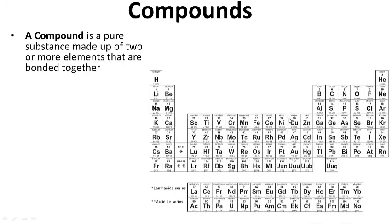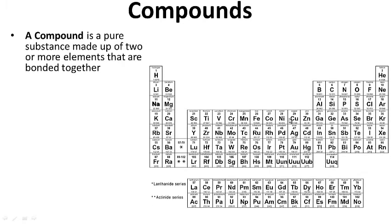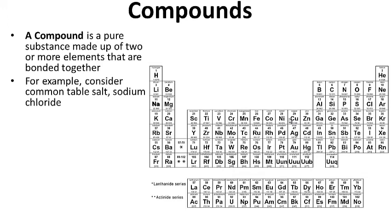Compounds. A compound is a pure substance made up of two or more elements that are bonded together. For example, good old table salt — sodium chloride — that is a compound.